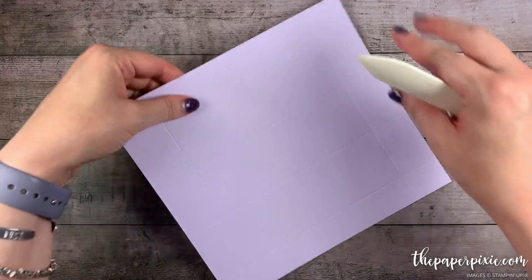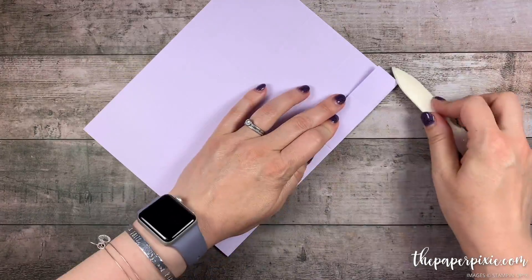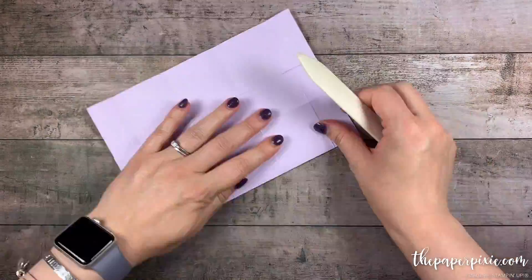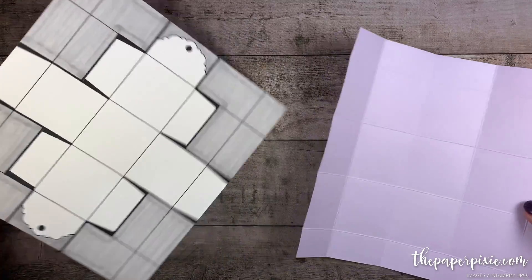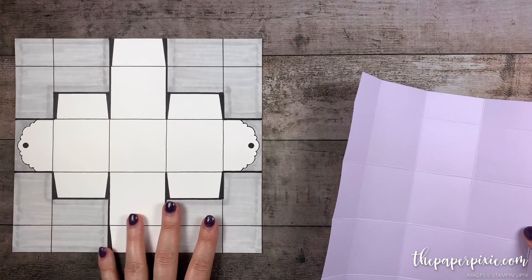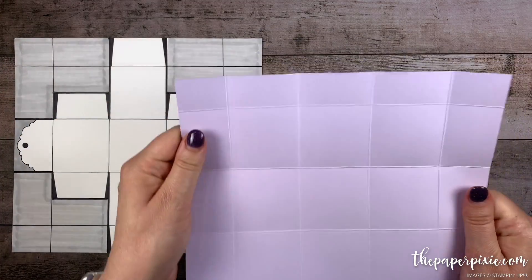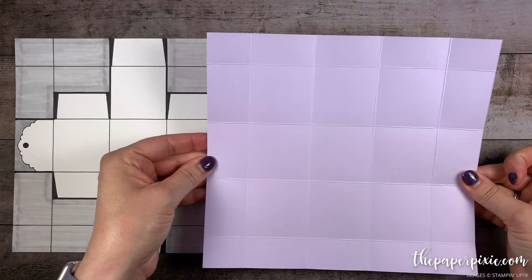Next we're going to fold and burnish on all the score lines. Now that that's folded and burnished I'm going to bring in a template here and I'm actually going to turn it in landscape mode. So this is the 8 and 3 quarter inch side. You want to turn your paper in that direction as well.